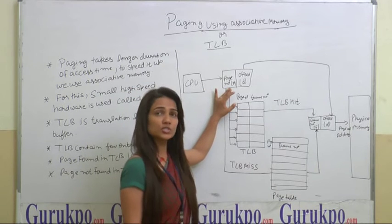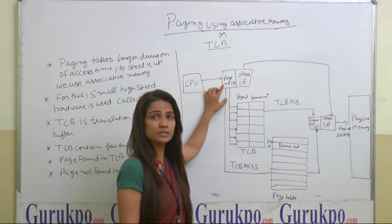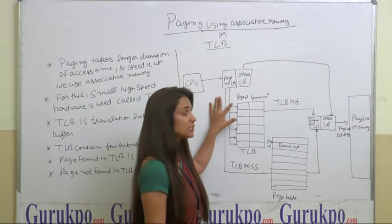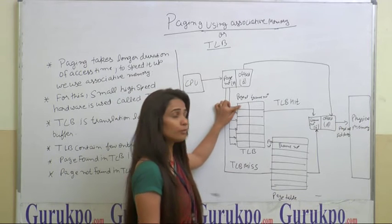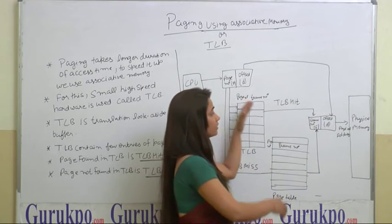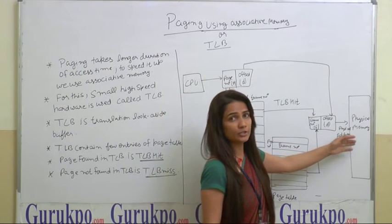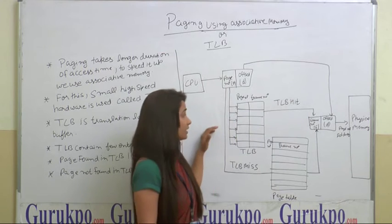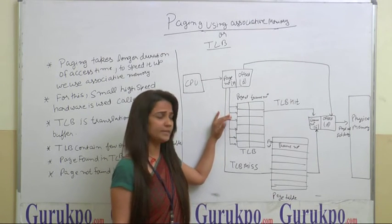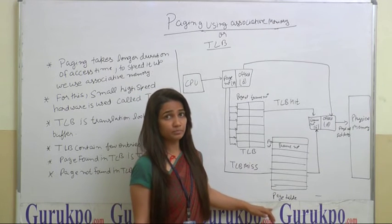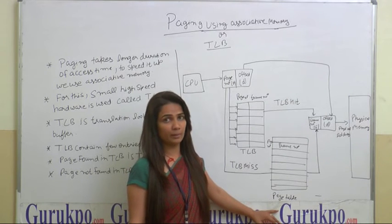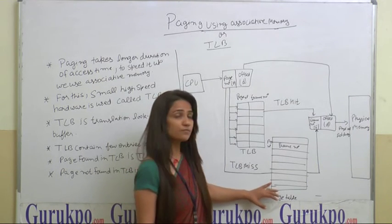The CPU generates a logical address, and this logical address that contains the page number will be searched first in TLB. If the page number is found in TLB, then its corresponding frame number will give the physical address, which will be provided to the process.